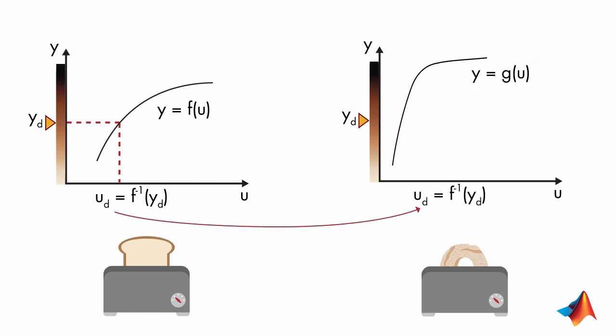Therefore, if you use the inverse of f, you're not going to get your desired color because the input needed to get the desired output is now calculated by taking the inverse of g. This shows that open loop control fails if you have variations in your system.